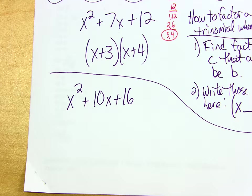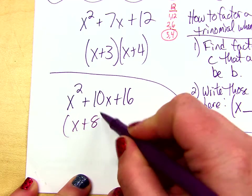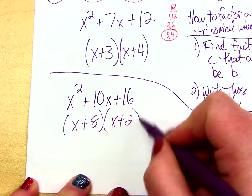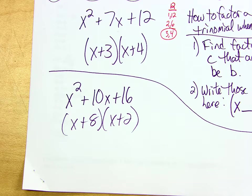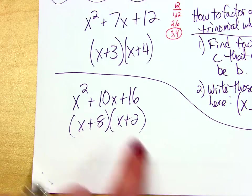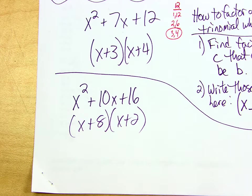Do you have the answer? Does everybody have the answer? Give me the two numbers that multiply to be 16 but add to be 10. 8 and 2. So that means my answer is just x plus 8, x plus 2. And it doesn't matter if you have the 2 there and the 8 there. That does not matter.